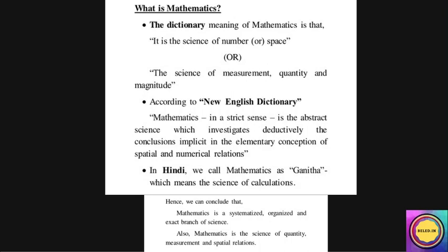Introduction के बाद next, what is mathematics — meaning में आप लिख सकते हैं: The dictionary meaning of mathematics is that it is the science of numbers or space. It is like measurement, quantity, magnitude, जहाँ पर हम numbers की addition, separation, algebraic operations की बात करते हैं — उसको हम यहाँ पर mathematics बोलते हैं।